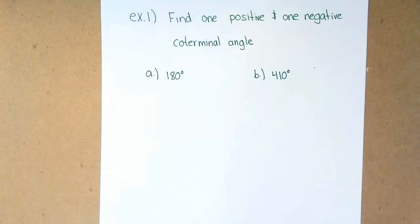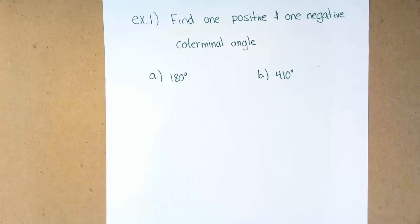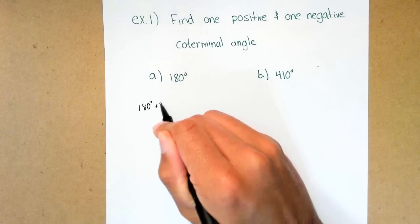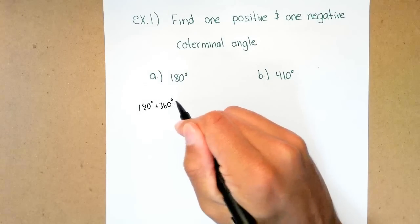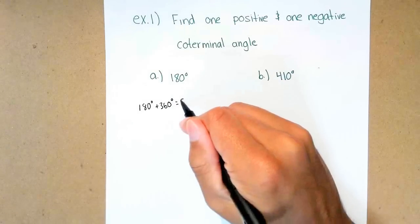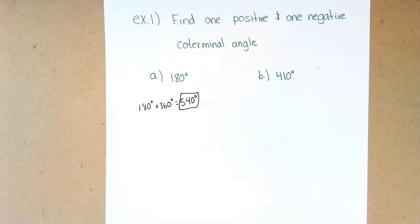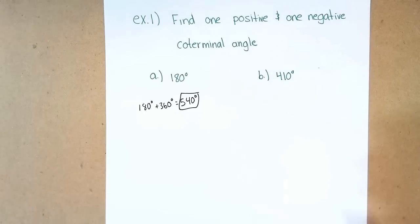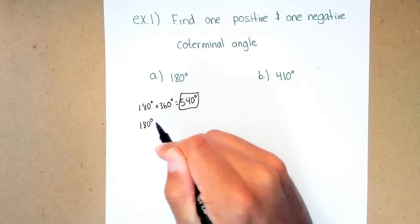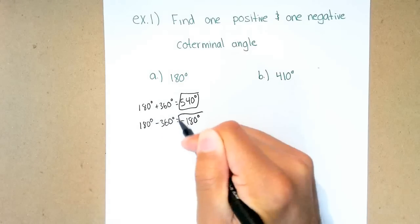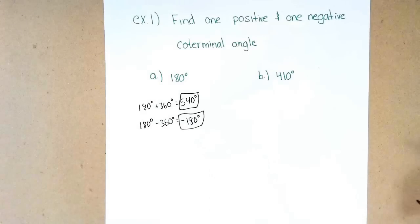Our first example: find one positive and one negative coterminal angle. I see that we're in degrees, so I'll add 360 to find a positive one. Adding 180 degrees plus 360 gives me 540 — that's my positive coterminal angle. There are infinitely many, since I can keep adding 360. Now I'll subtract 360 to find a negative: 180 minus 360 gives negative 180 degrees. That's my positive and negative coterminal angle pair.